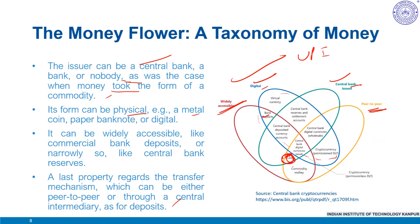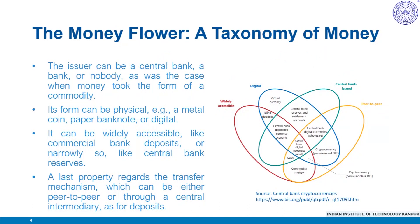Bank deposits are widely accessible, issued by private banks — so not in the central bank category — and not peer-to-peer since there is an intermediary. If you think of digital currency, particularly in the permissioned version of a digital ledger, it will be digital and peer-to-peer, but not part of central bank issuance, and not so widely accessible because you need certain systems and computing power to access it. This way, under this taxonomy, you can also define cryptocurrency.